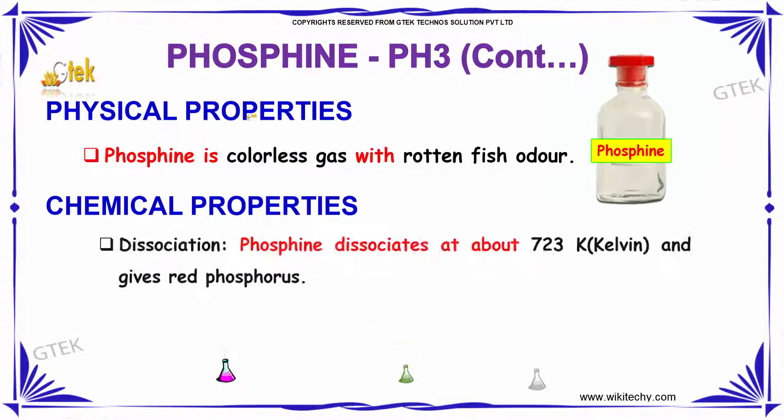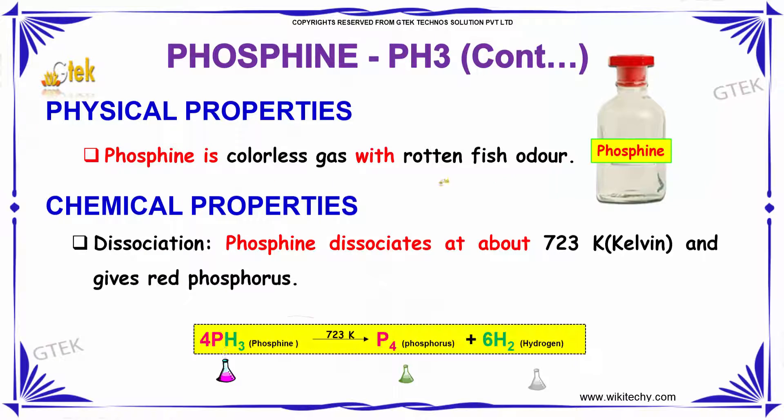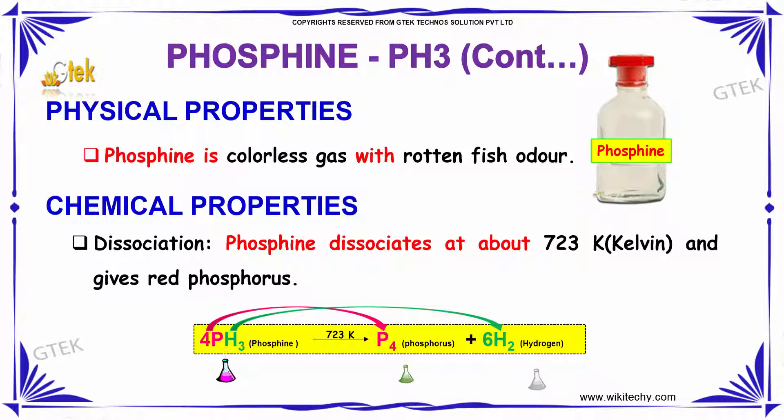If we talk about the physical properties, Phosphine is a colorless gas with a rotten fish odor.